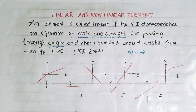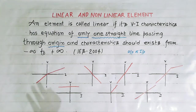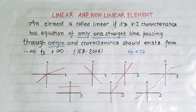Or we can simply say that a linear circuit is an electric circuit having parameters — resistance, inductance, or capacitance — which are constant. They do not change with respect to voltage or current. We will understand this more clearly by taking an example.